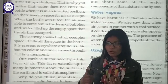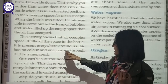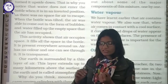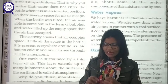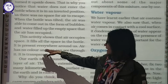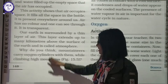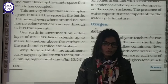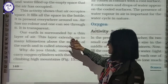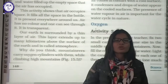Air has a third property — no color, and one can see through it; it is transparent. So the properties are: air is transparent, air occupies space, air is lightweight, and air has no color. Our earth is surrounded by a thin layer of air. This layer extends up to many kilometers above the surface of the earth and is known as the atmosphere.